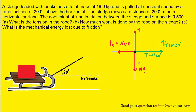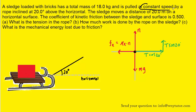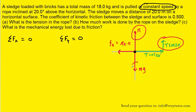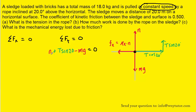The sledge is being pulled at constant speed, which tells us the sum of forces in both the x and y directions must equal zero. In the y direction, there are three forces: the upward normal force, the upward T sine 20°, and the downward negative mg. Solving for the normal force by rearranging gives us: normal force = mg minus T sine 20°. We'll hold on to this result.